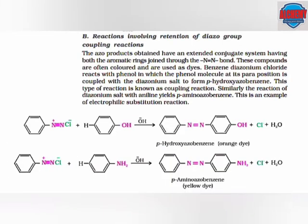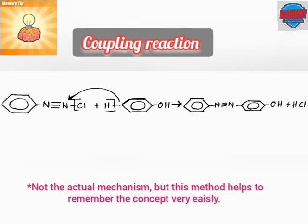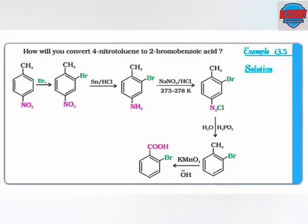Benzene diazonium chloride reacts with phenol, in which the phenol molecule at its para position is coupled with the diazonium salt to form para-hydroxyazobenzene. This type of reaction is known as a coupling reaction. Similarly, the reaction of diazonium salt with aniline yields para-aminoazobenzene. This is an example of electrophilic substitution reaction. The memory tip is that the hydrogen of phenol combines with the chlorine of benzene diazonium chloride to form HCl, and the remaining parts combine to form para-hydroxyazobenzene.